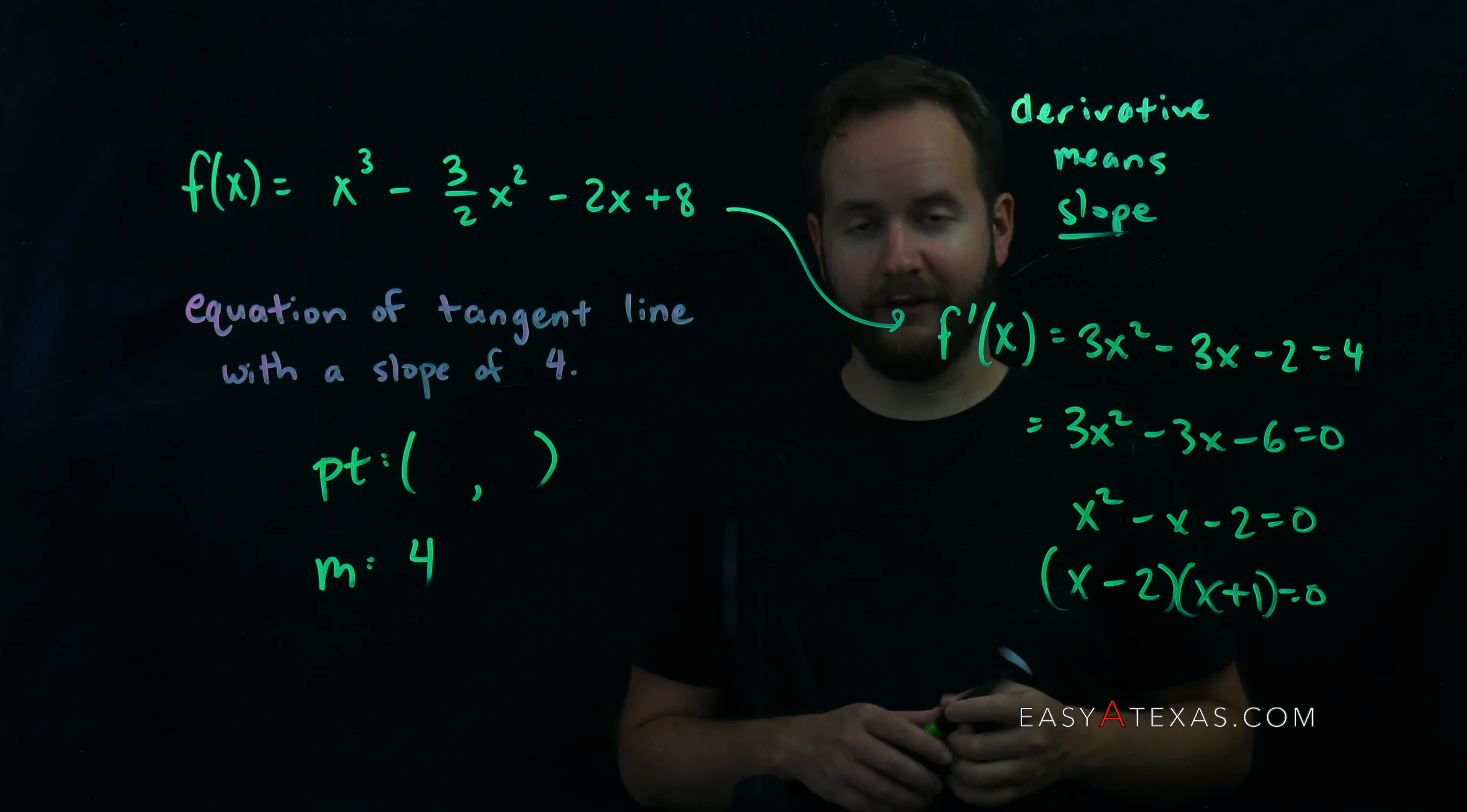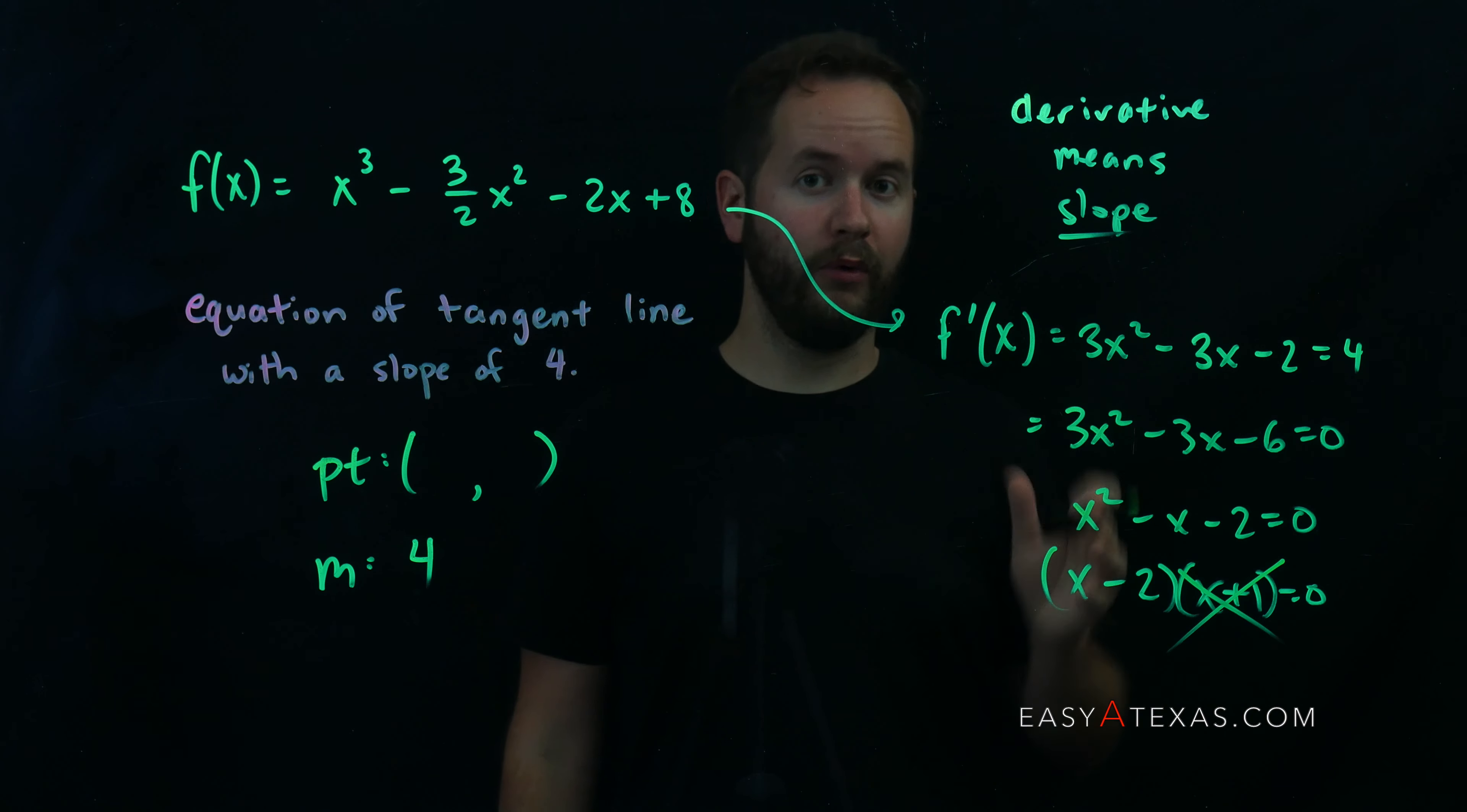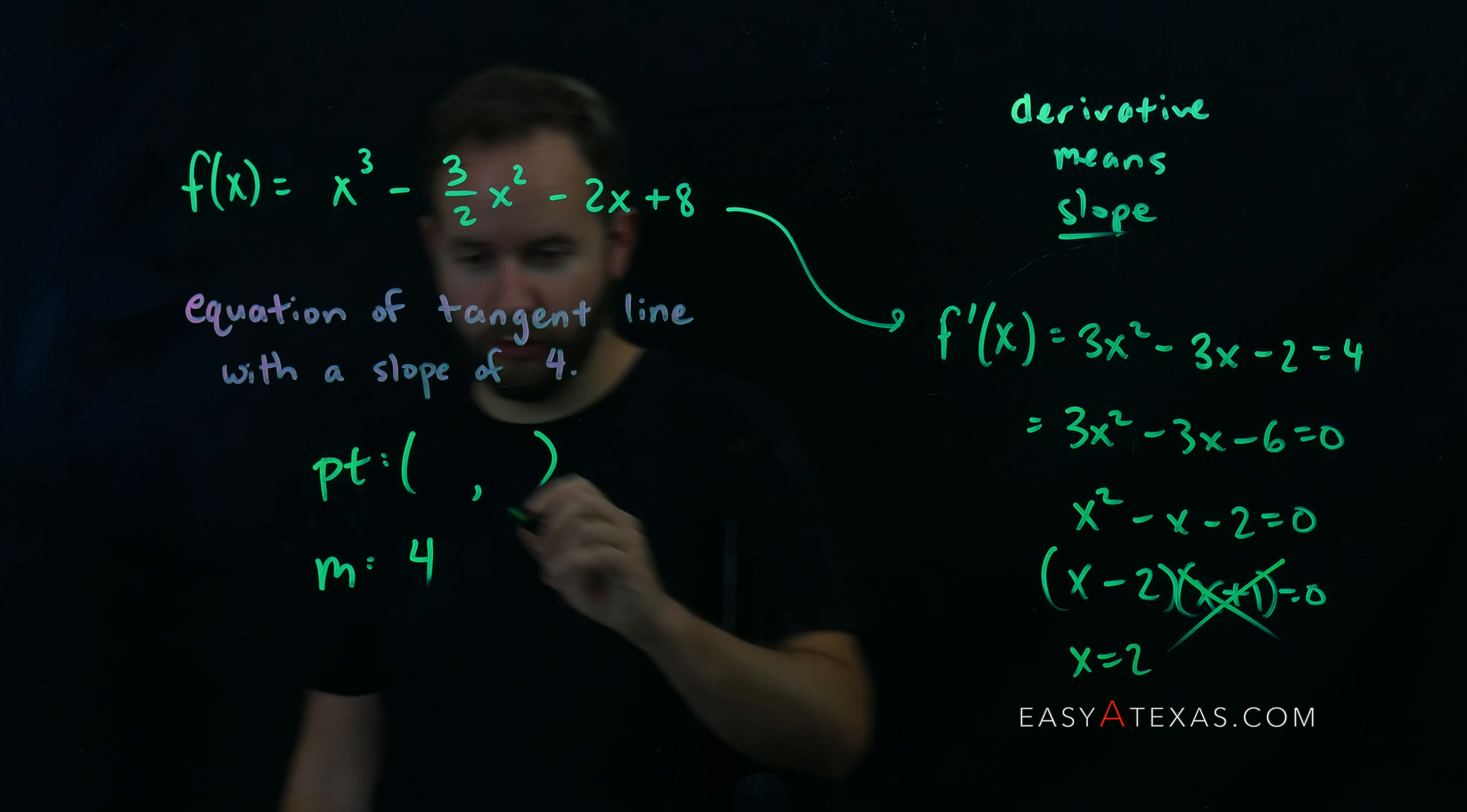But we said first quadrant. That was part of the problem stipulated here, is that we're looking for a point in the first quadrant. So x equals negative 1 gets thrown away, and we want x equals 2. That gives me the x coordinate of my point.